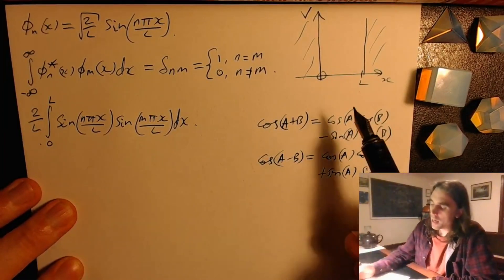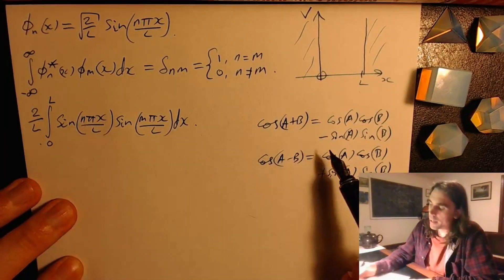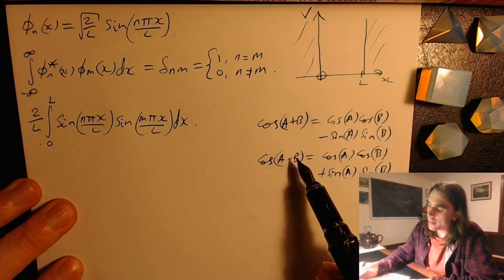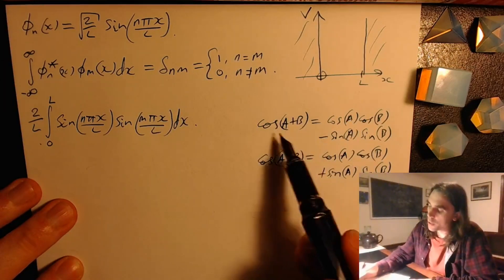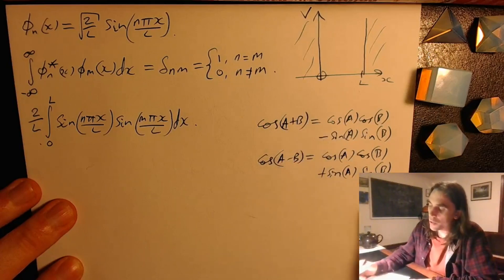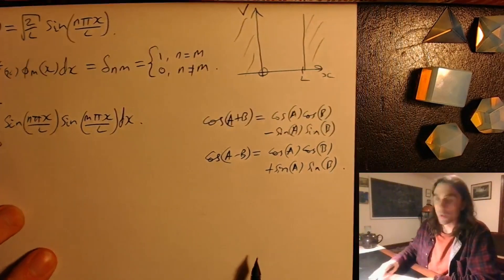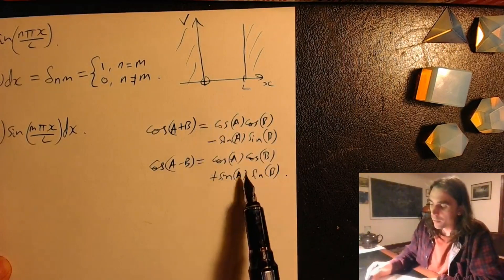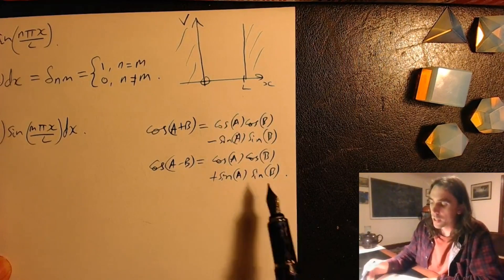Okay, so if we put a equals n pi x over L, b equals m pi x over L, we want to subtract this expression from this expression. That'll give us 2 sin a sin b over here.